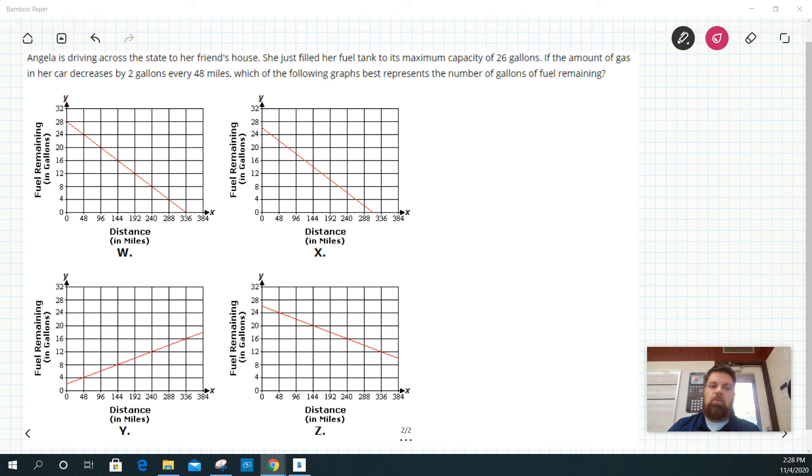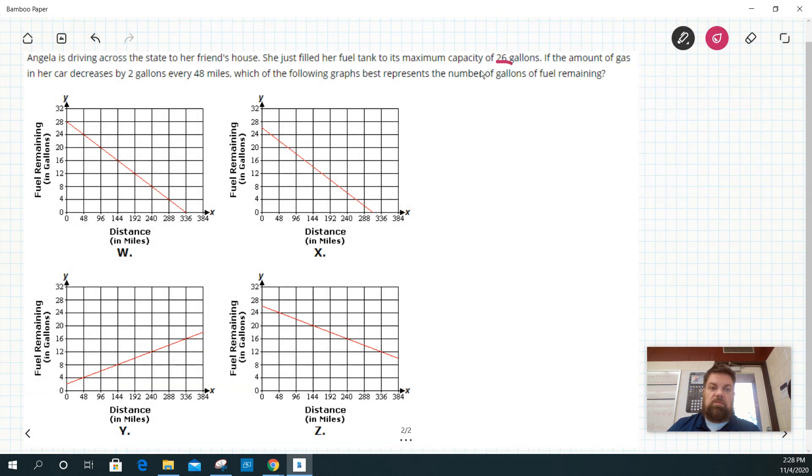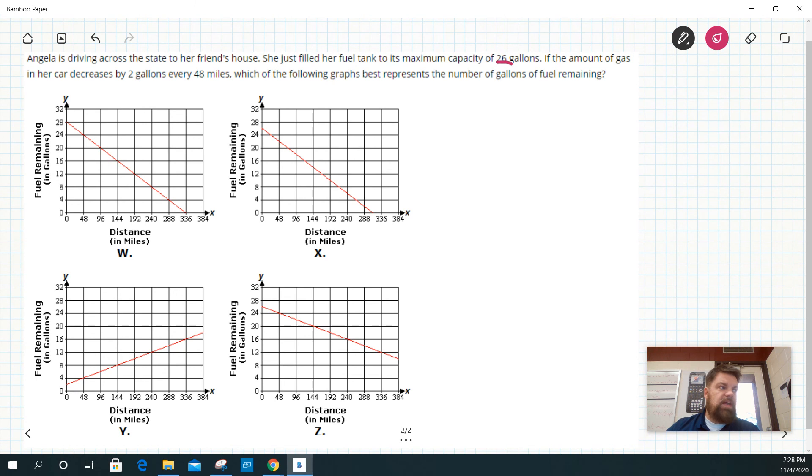So basically what I'm looking for is a y-intercept of 26. This one has a y-intercept of 28, so that's not it. This is a y-intercept of about 26, so that could be it. This is a y-intercept of 2, that's not it. And this is a y-intercept of 26. In other words, zero gallons, you have 26. That's always the y-intercept.